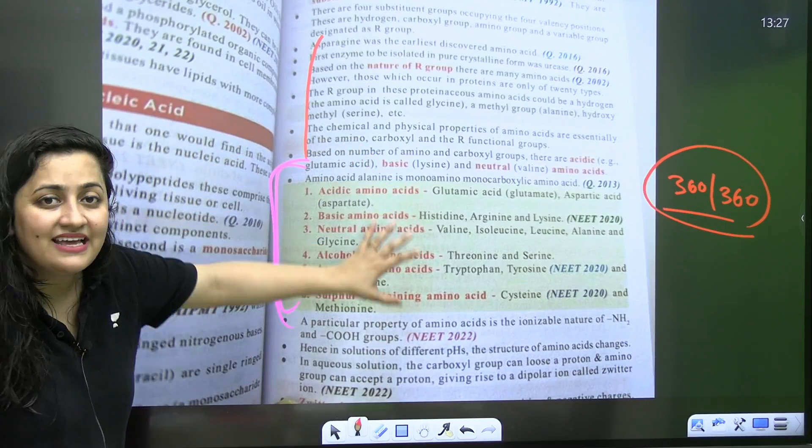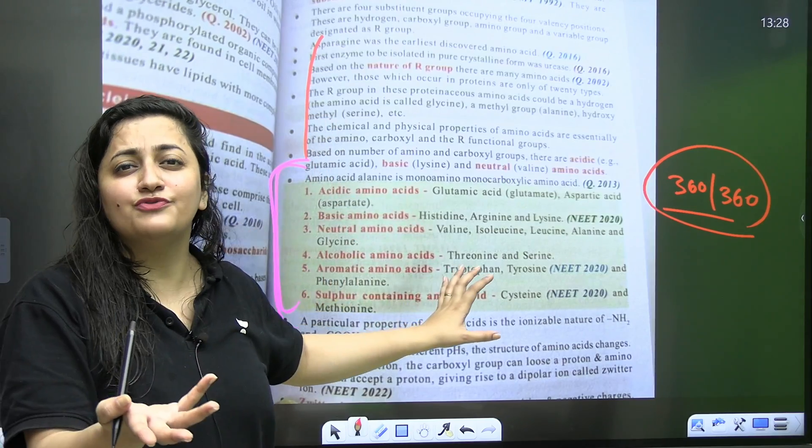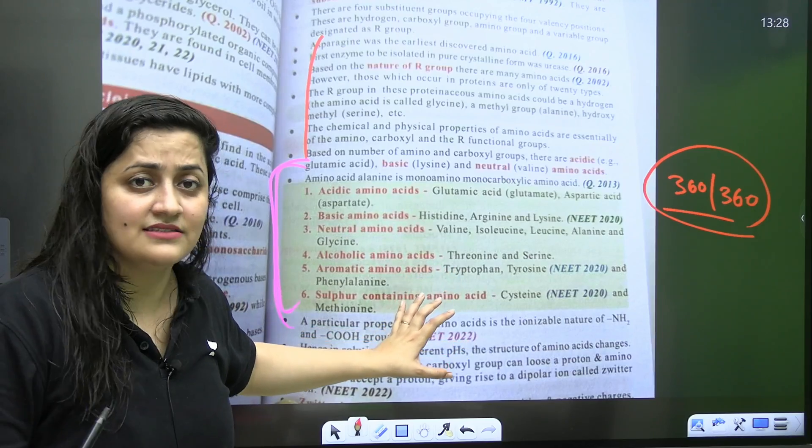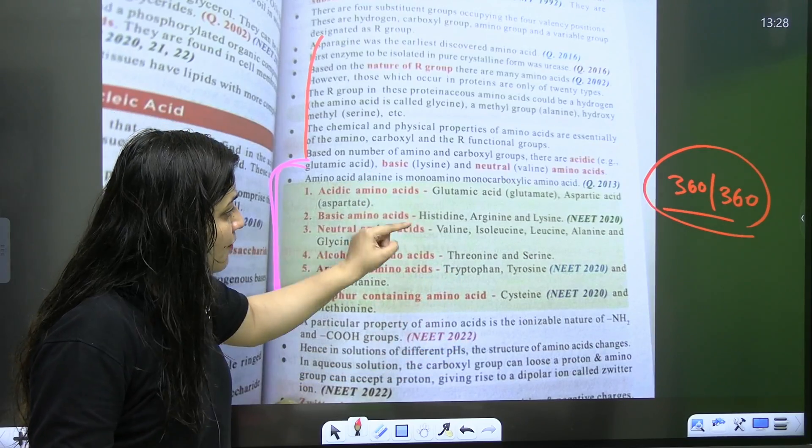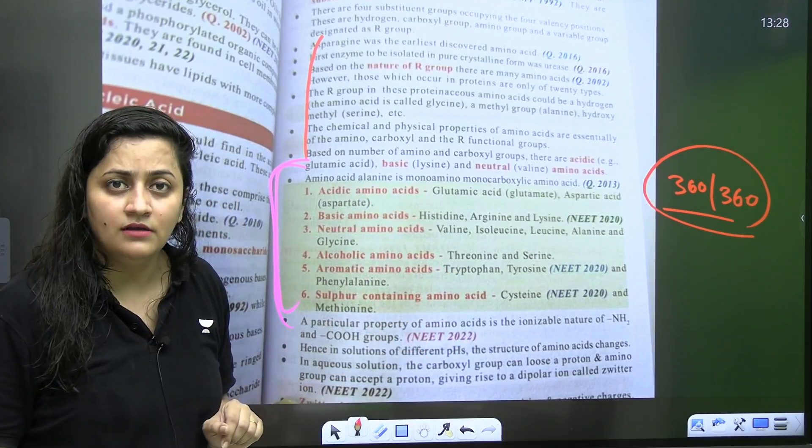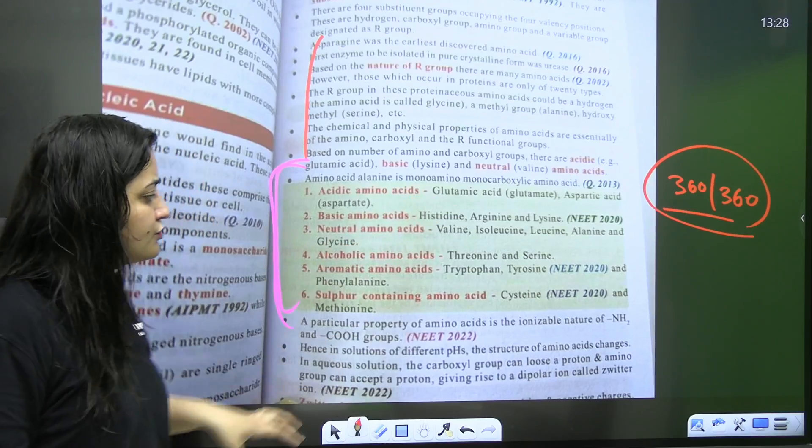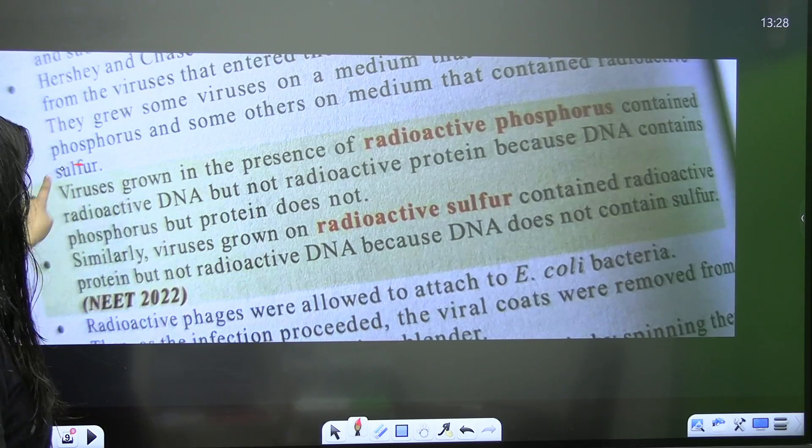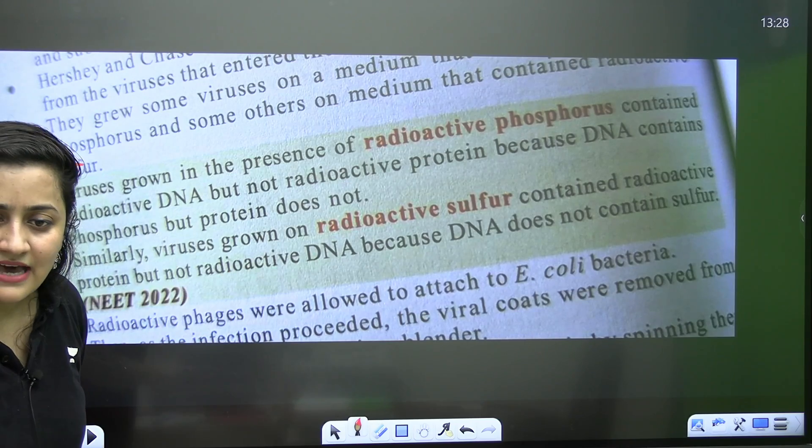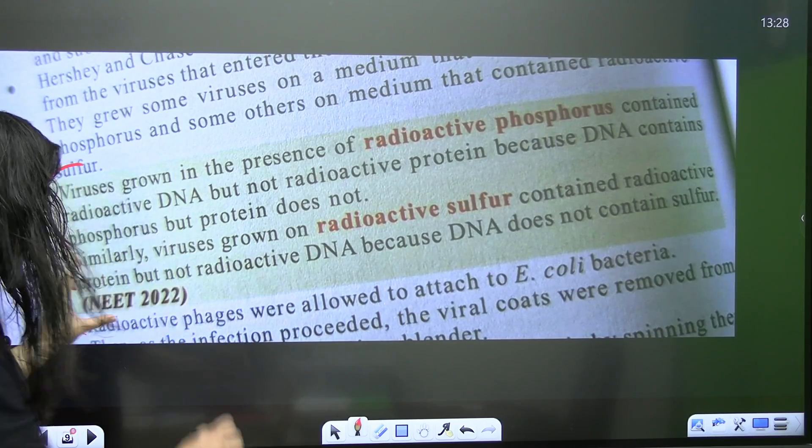And your notes should be like this. Many times, students, they ask me that how to make notes from NCRT. Everything is important. Yes. But see, these are the points. These are memory-based points here, like acidic, amino acid, basic, neutral. So, every time you used to get questions from this part. And that's how, see, these all statements are from NCRT.